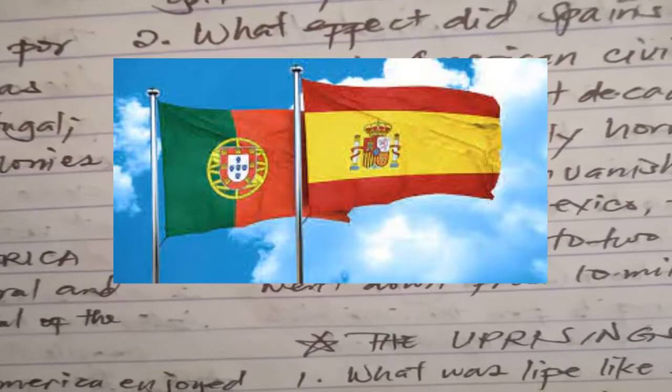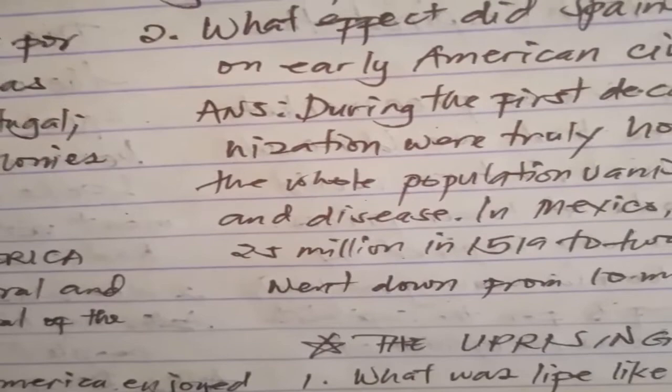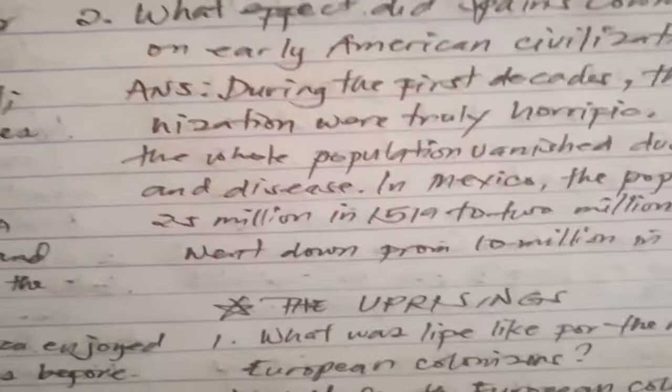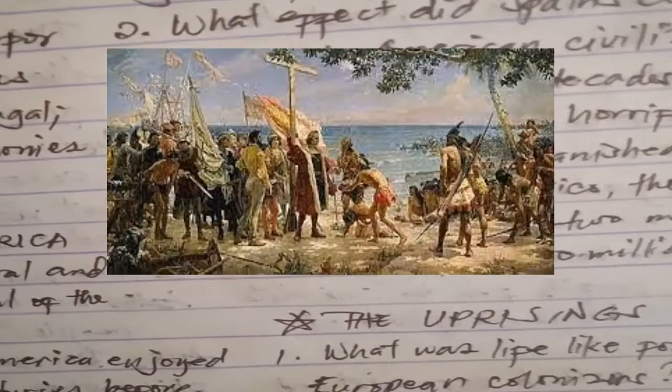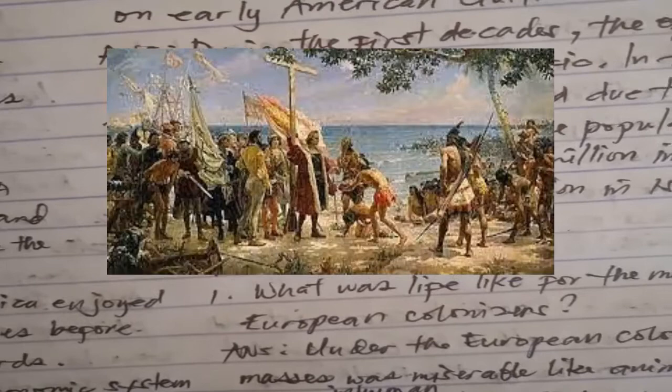Europeans, led by Spain and Portugal, launched expeditions with the aims to find new trade roads, to open the minds to the possibility that the world was in fact round, and to discover new lands. What effect did these expeditions have on the European kingdoms?